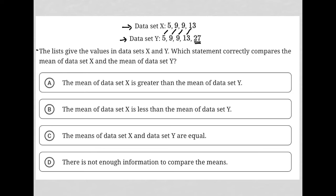The question asks us to compare the mean of data set X and the mean of data set Y. Before even looking at the answer choices, the means would be the same if that's all we had. But data set Y has an additional value that is more than double the largest value in data set X, so data set Y should have a higher mean. That makes sense logically.